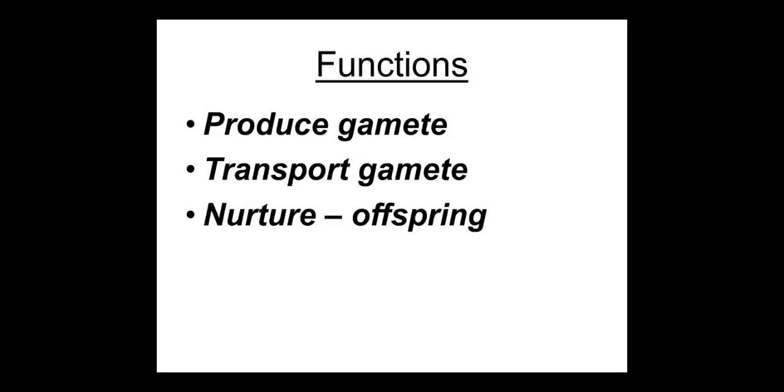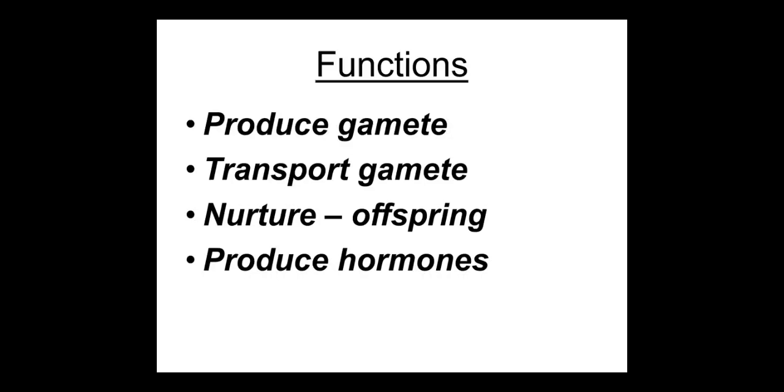The third important function of the reproductive system is to provide sufficient nutrients to the developing offspring. The fetus stays within the pregnant mother's womb — the uterus — for nine months, and those nutrients are supplied by the reproductive system. The fourth function involves hormones — without hormones there is no biological process. The reproductive organs also produce hormones to maintain normal function. So the four functions are: produce gametes, transport gametes, nurture the offspring, and produce hormones.